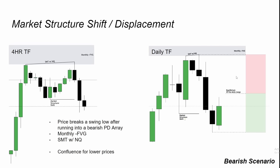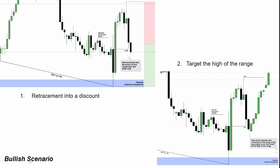After the market structure shift, you wait for price to retrace into a premium of the range — the daily range from the swing high to the swing low that created the market structure shift — to see if price can then continue down. In the bullish scenario, after a market structure shift we wait for a retracement into a discount of price. Here, price retraces into a discount of the four hour range into a four hour bullish order block.